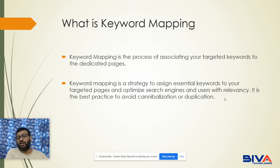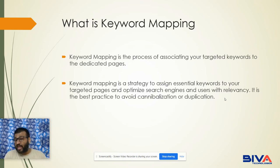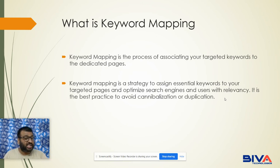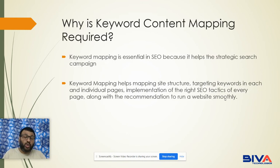Suppose you are an e-commerce store and you are going to sell a product. Some keywords related to that product may be irrelevant, and if you target those keywords you may lose traffic and business potential. That's why you must always work with relevancy. It is also the best practice to avoid cannibalization or duplication — keyword mapping helps you avoid duplicate content and duplicate pages that can cause your site to lose ranking and revenue.